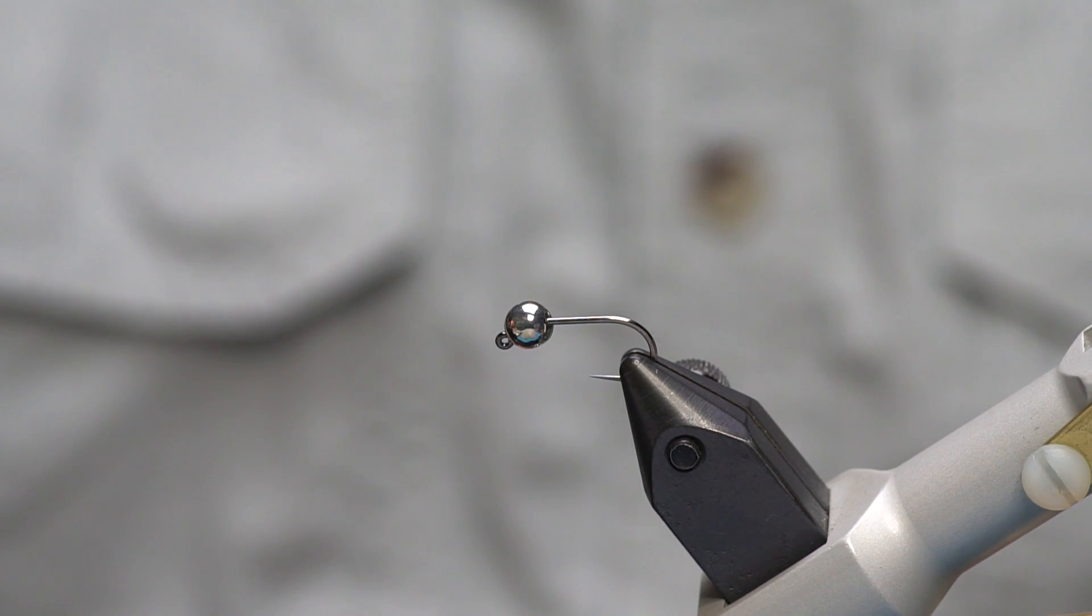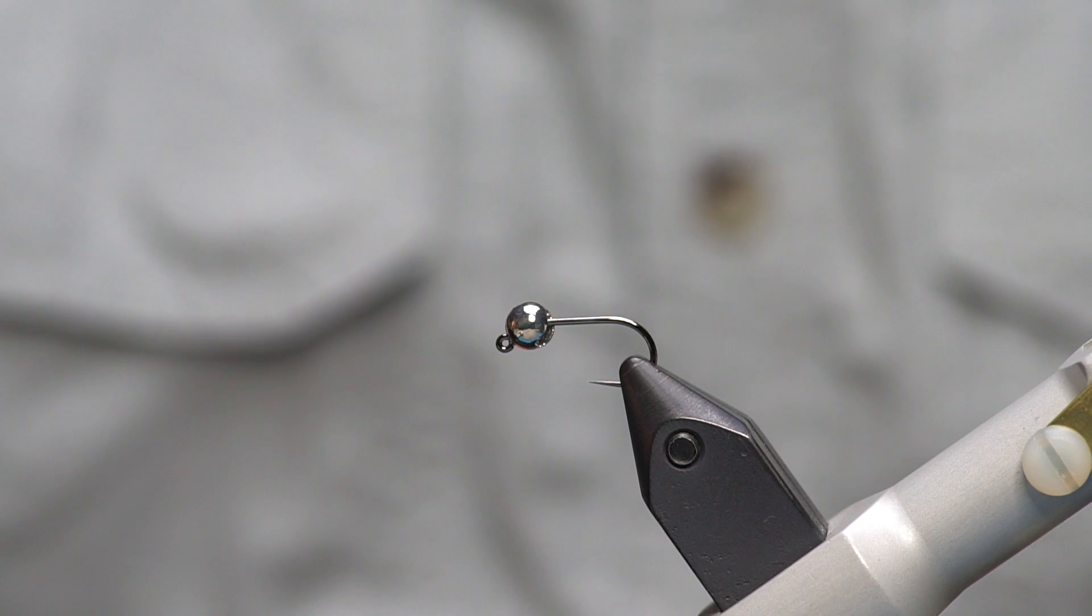All right everybody, Lance Egan again with Fly Fish Food and I want to show you a jigged streamer. You've probably seen lots of streamers that are tied on jig hooks or jig style. This particular one is designed to be used on a European nymphing rig.